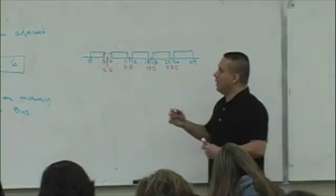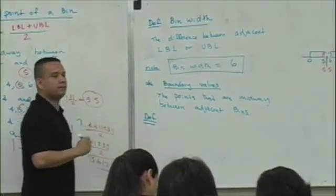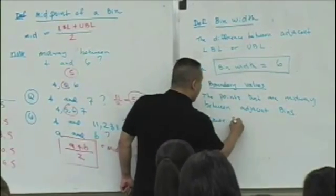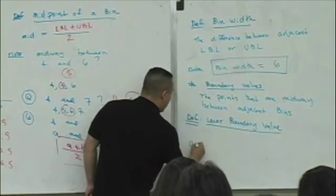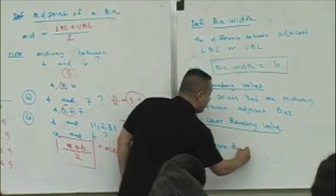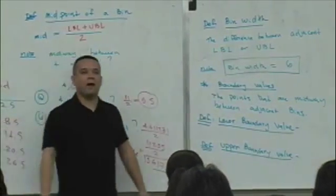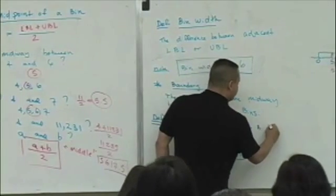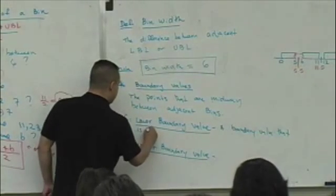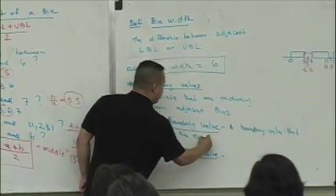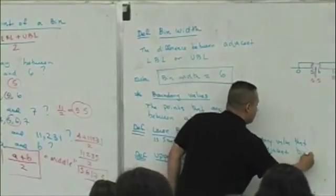Definition here. I'm going to define for you two other things. Definition of what's known as the lower boundary value and the definition of what I'm going to call the upper boundary value. The lower boundary value is a boundary value that is smaller than every value of the adjacent bin. I'll describe to you what that means.